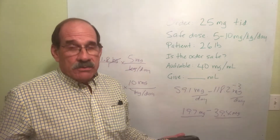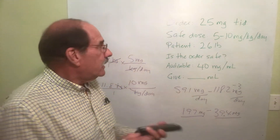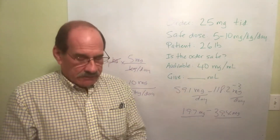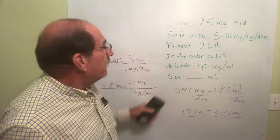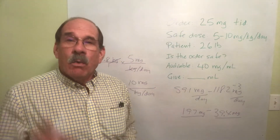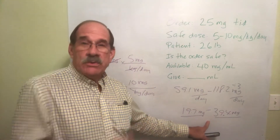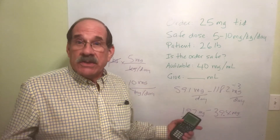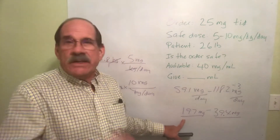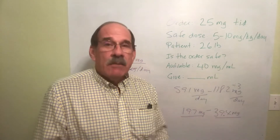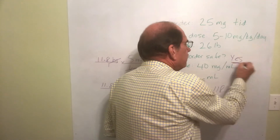That's a safe range per dose. Now I need to check: is the doctor's order safe? What was prescribed? 25 milligrams. Where does that fall? Right in the middle of the range — it's between 19.7 and 39.4. So yes, it's safe. If the order were lower than 19.7, it wouldn't be safe. If it were above 39.4, it also wouldn't be safe. But it is within that range, so it's safe.